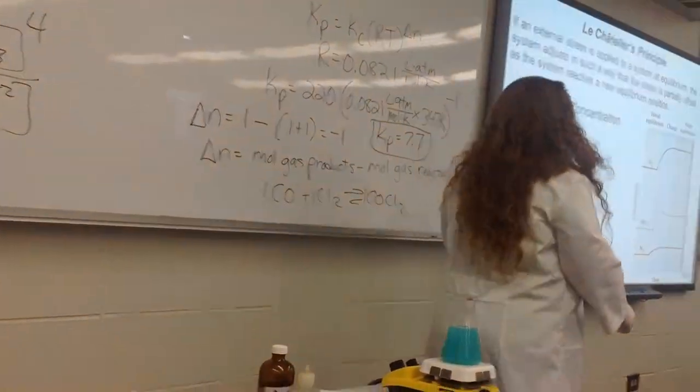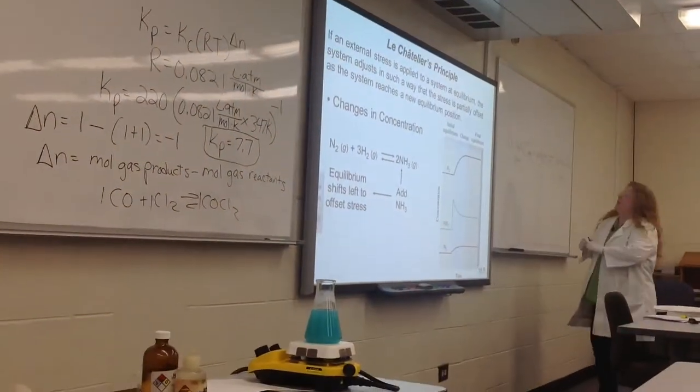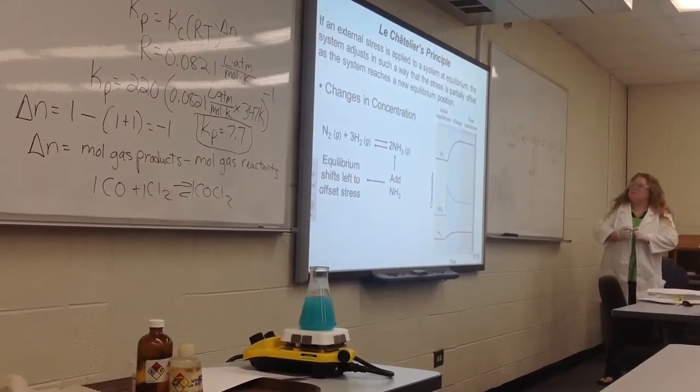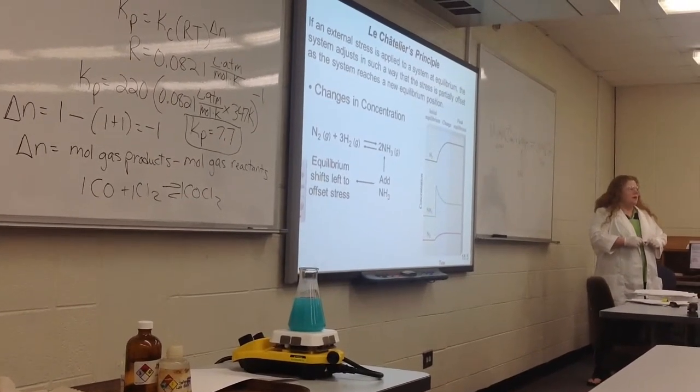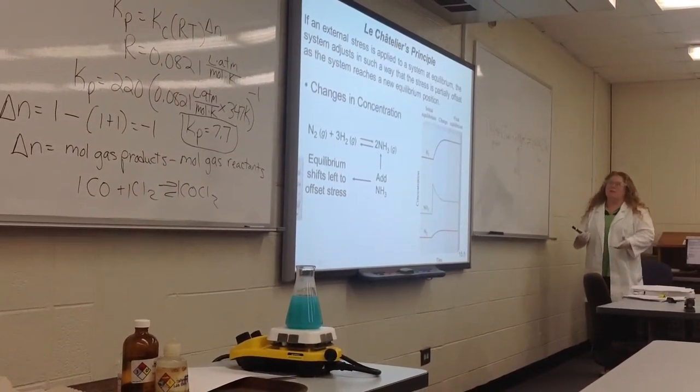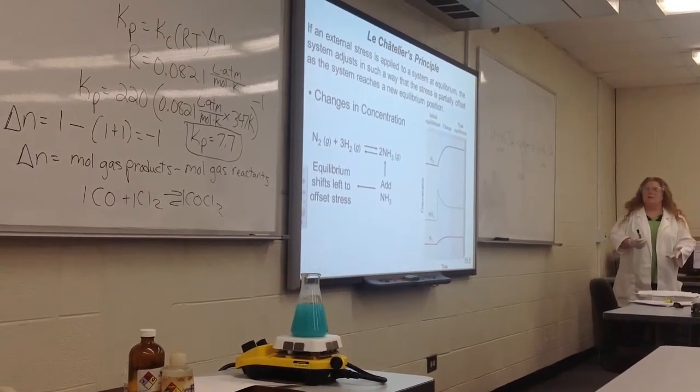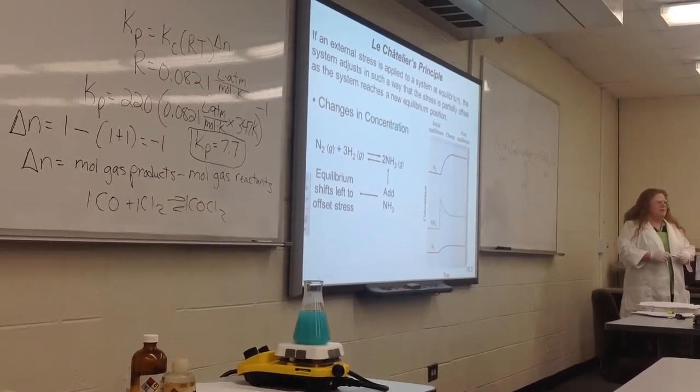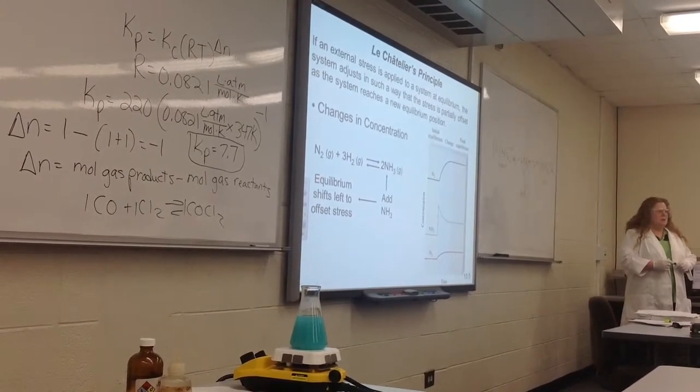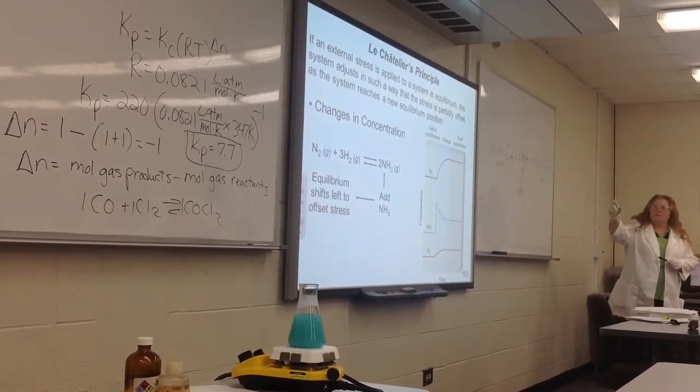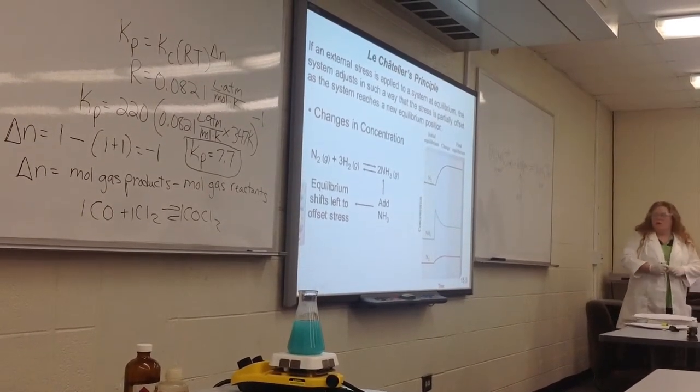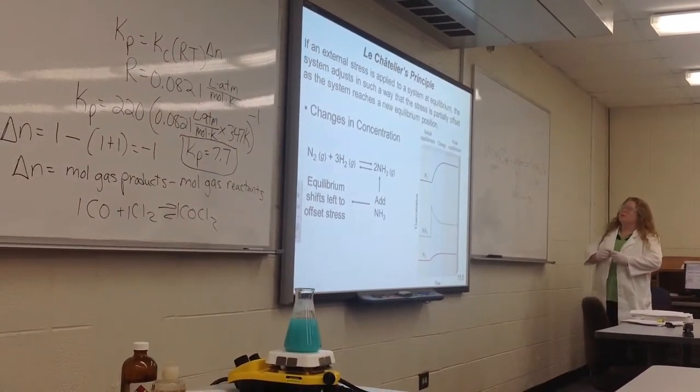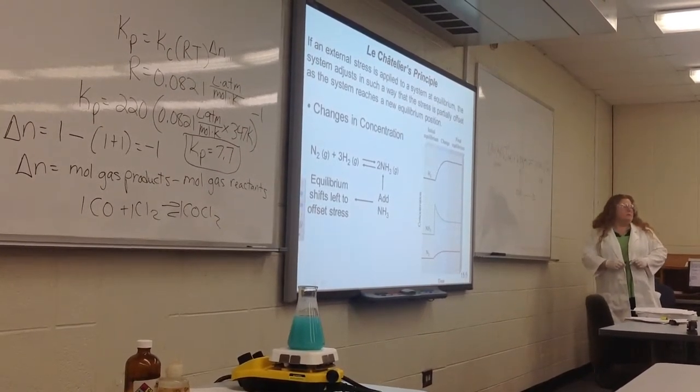So what we've done is added ammonia to the equilibrium. Le Chatelier's principle says that if the system's at equilibrium and we apply a stress to the system, the equilibrium will shift to try to offset that stress. Which way did the reaction shift? Did it shift to reactants or to the product side? The product side. The reaction shifts more towards the side of the product. The mixture gets more blue.